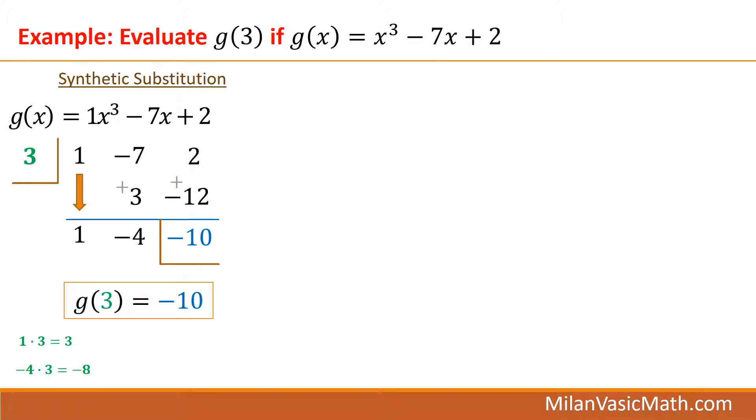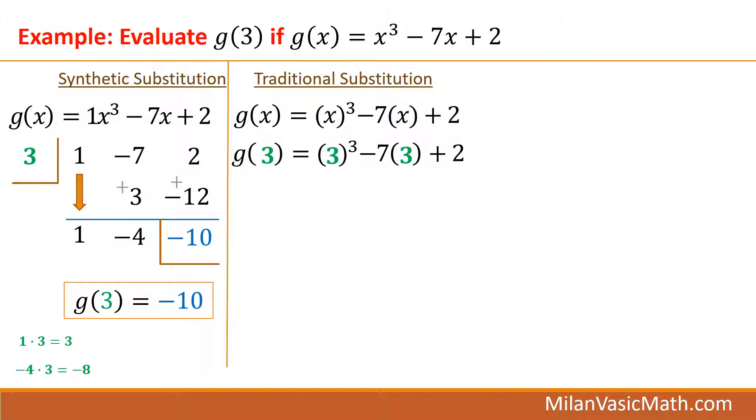So according to work that I just did, g of 3 is negative 10. I'm going to check it by doing the traditional substitution as well. So write the parentheses. Substitute. 3 to the third power. 3 times 3 times 3. That part right here is 27 minus 21 plus 2. 27 minus 21 is 6 plus 2 is 8. So g of 3 equals 8.